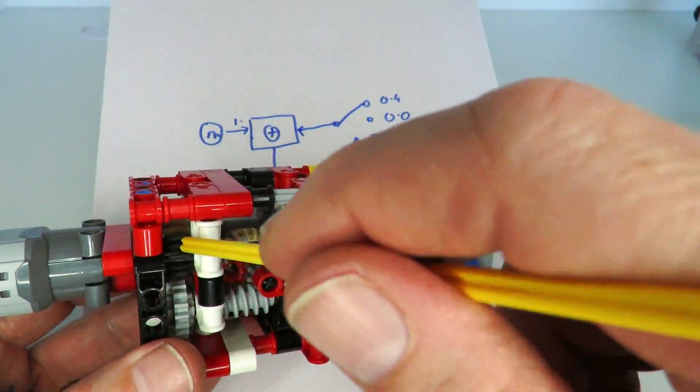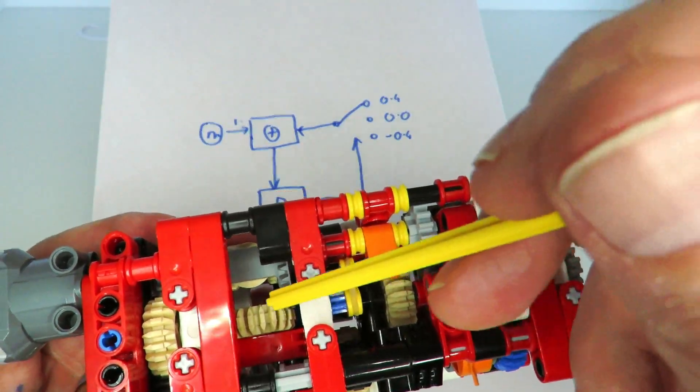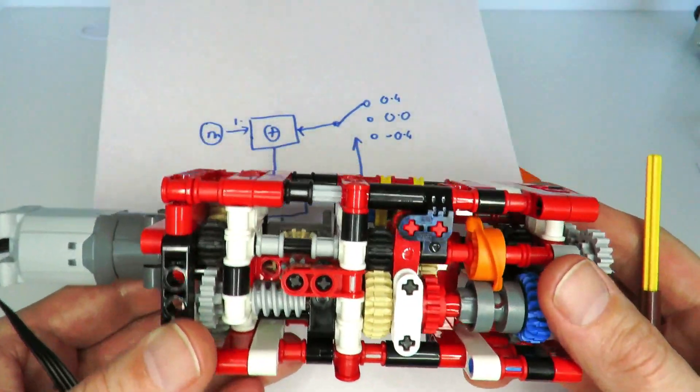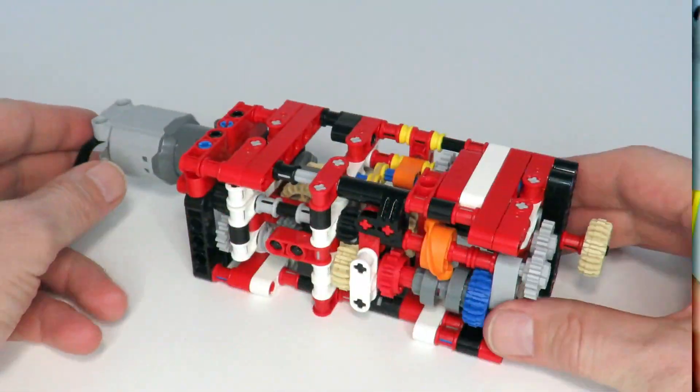Those speeds then get fed back through this worm gear, and that worm gear is to prevent the neutral gear being driven backwards and losing traction, so that's important for that reason. Then that drives back through the gearing on the internals in here and gets added back into that summing differential over there. That creates the overall output, so that's how the diagram relates to the actual design.